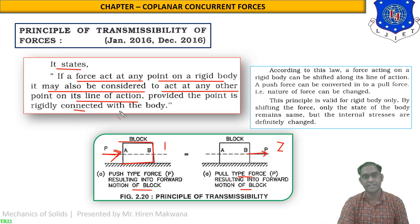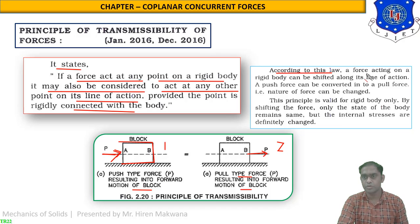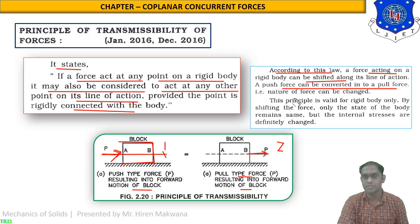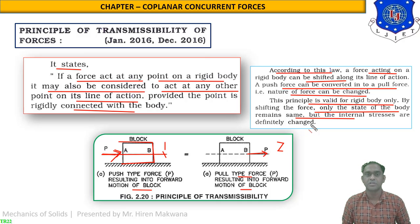The required condition is that points A, B, or any other point where forces are applied must be rigidly connected with the body. According to this law, a force acting on a rigid body can be shifted along its line of action — a push force can be converted into a pull force. This principle is valid for rigid bodies only. By shifting the force, the state of the body remains the same, but the internal stresses are definitely changed.